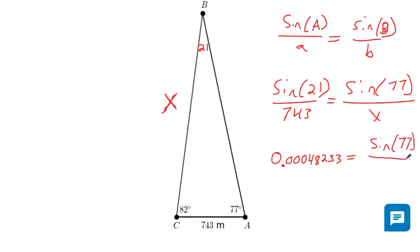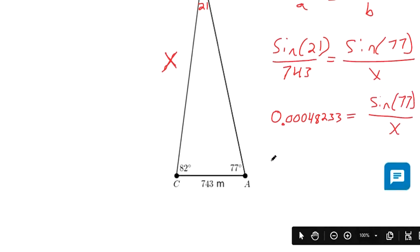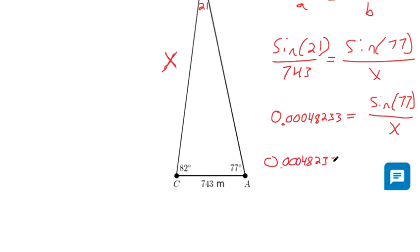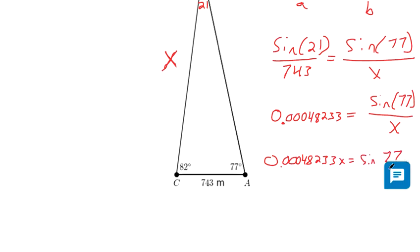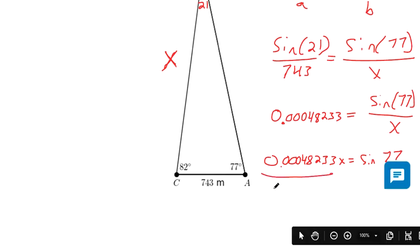And now you can't solve an equation when x is in the denominator, so let's multiply both sides by x. And then we're trying to get x by itself, so let's divide 0.00048233 from both sides. I'm just going to put quotes so I don't have to write that again.